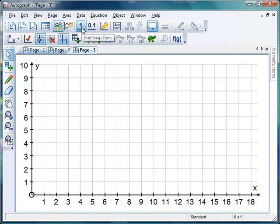Now I'm in grid snap settings of 1, so Autograph's only going to let me put on integer values, but that's OK. So I'm just going to pop a few points on, scatter them around, that looks good to me.